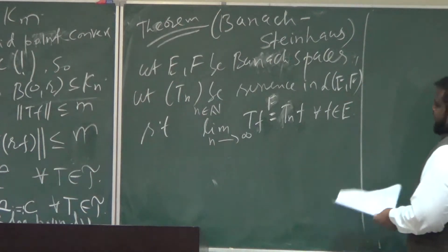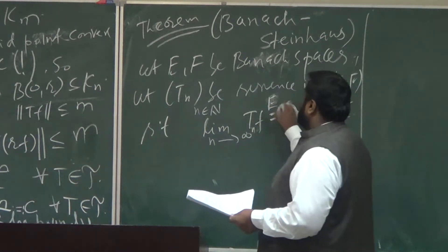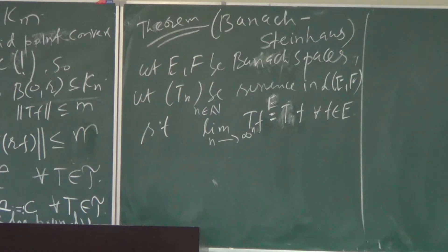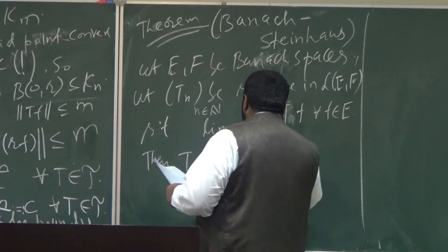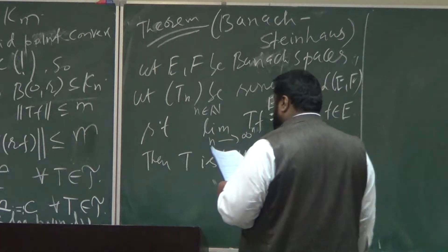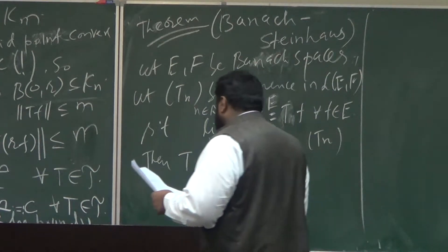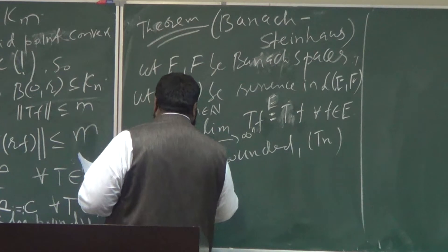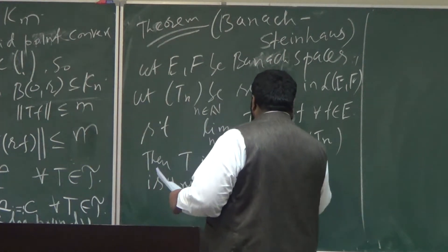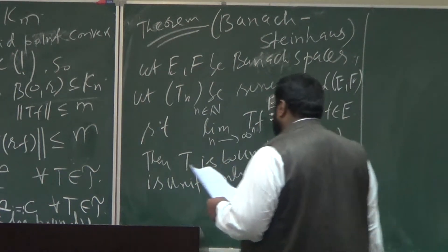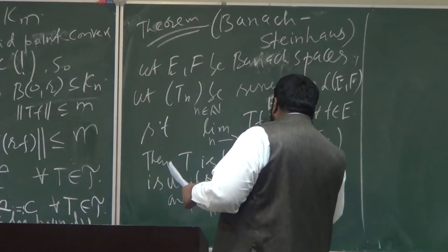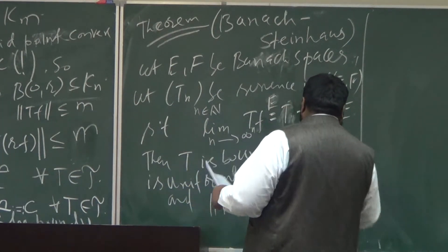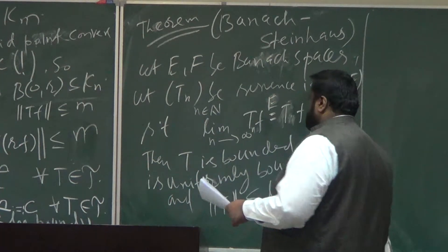So what is, if this is the case then T is bounded and Tn is uniformly bounded, and the norm of T can be estimated by the limit of the norm of Tn.